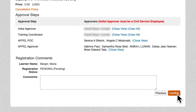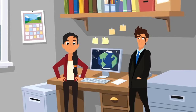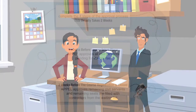That will set your registration request in motion. You will see confirmation that your request has been received. Your registration request will move through Saturn to complete the four steps of the approval process. This usually takes about two weeks. The next step in the registration process doesn't occur until four weeks before the course is scheduled to take place. At this point, Apple approves all civil servants pending for the course, completing the four-step approval process for civil servants.